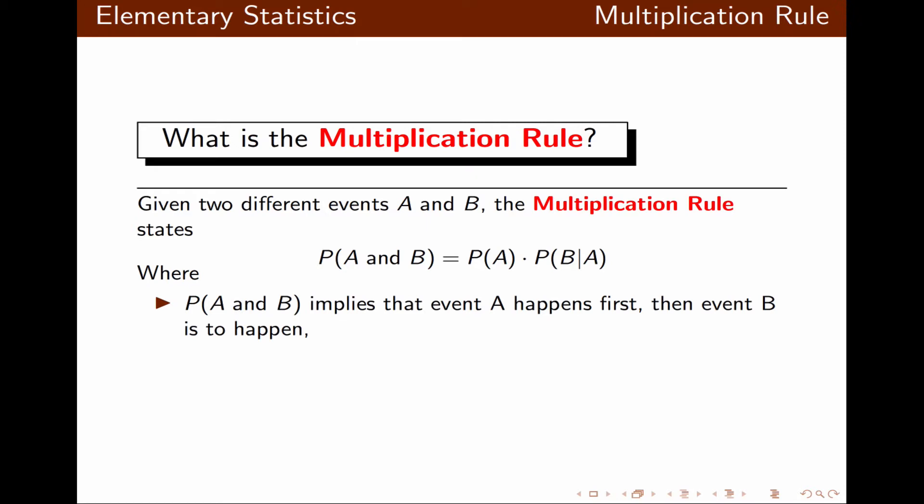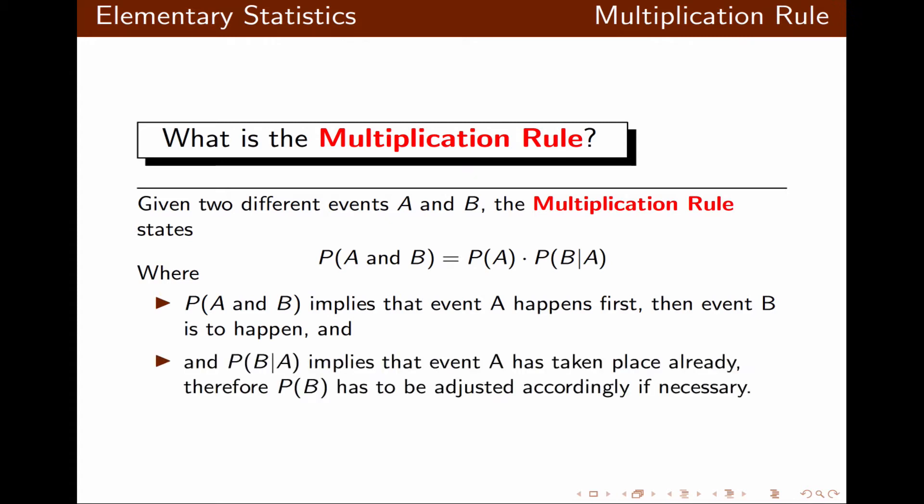Keep in mind probability of A and B requires event A to happen first, followed by event B to happen. And probability of B given A implies that A has already taken place, therefore probability of B has to be adjusted accordingly when necessary.